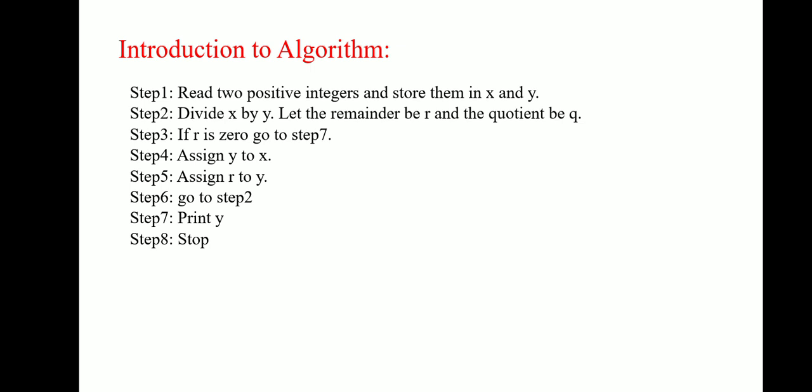Then divide X by Y. So 15 divided by 6, the remainder is 3 and quotient is 2. If R is 0, go to step 7. R is 0 means if remainder is 0, then directly print the Y output and stop.